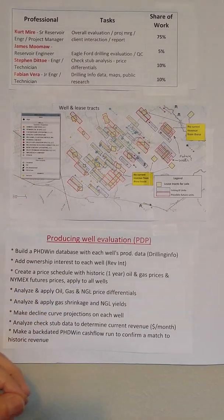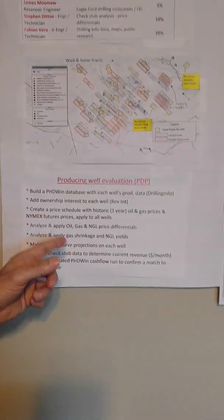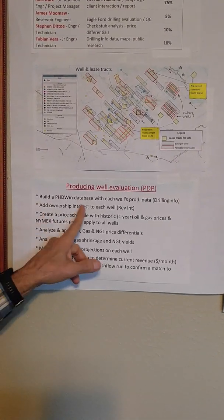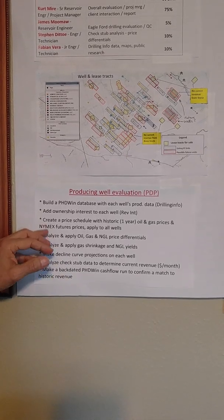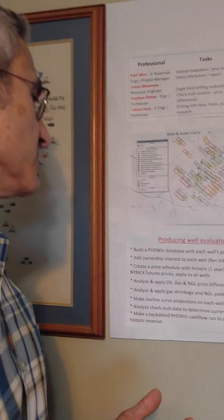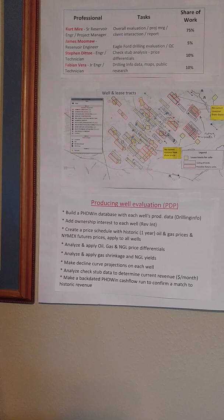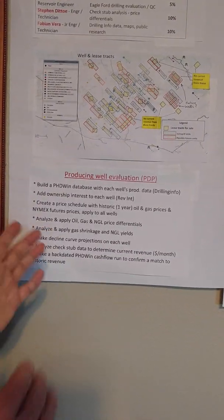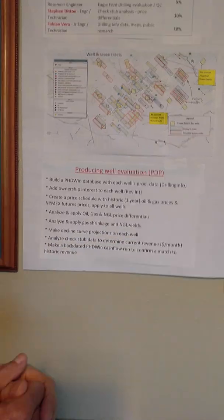The first thing we do to start the valuation is evaluate the producing wells. We build a PHDWin database with each well's production from Drilling Info, the public data we use. We add the ownership interest to each well that the seller gives us from the check stubs. We create a price schedule with historic data for oil and gas prices and futures prices, and we use NYMEX most of the time, applying that to all the producing wells.